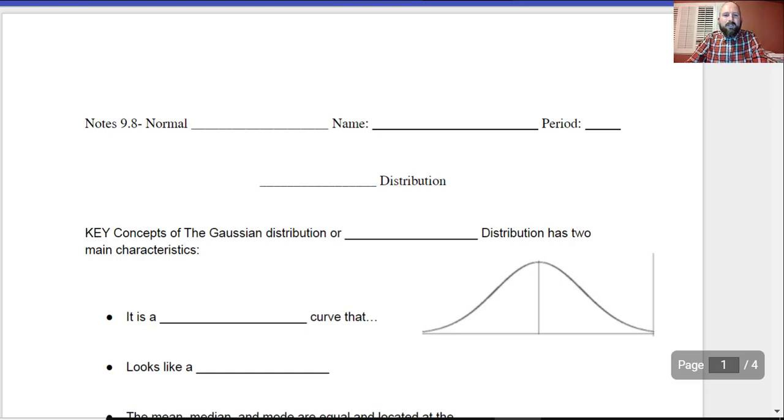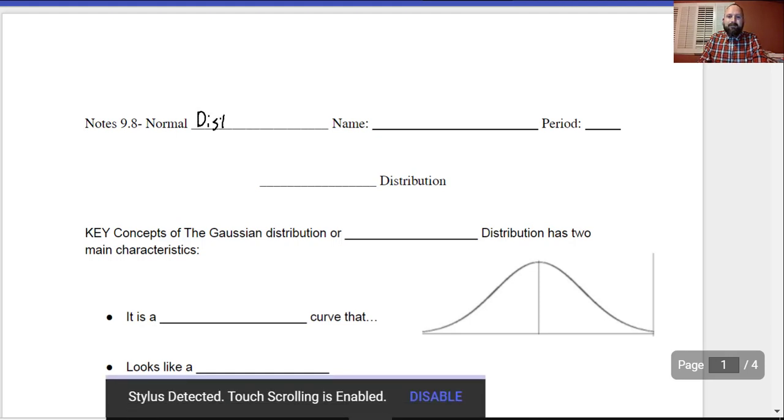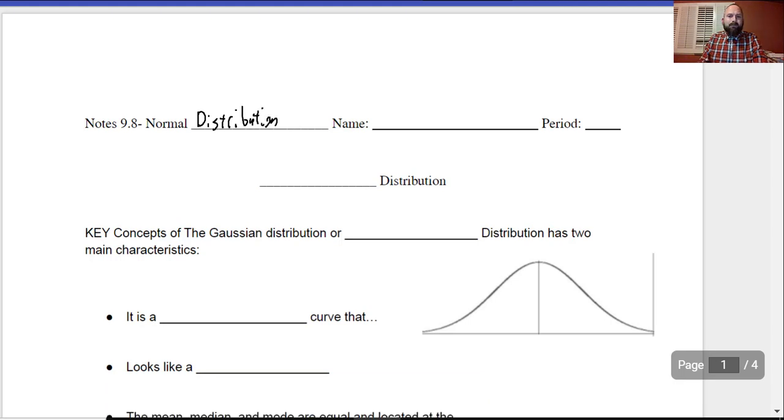Hello everyone, Mr. Schultz here for Integrated Math 1 and we're talking about 9.8 normal distribution. Make sure you put your first name and your last name and your period number at the top please. Once again we're going to be talking about normal distribution.